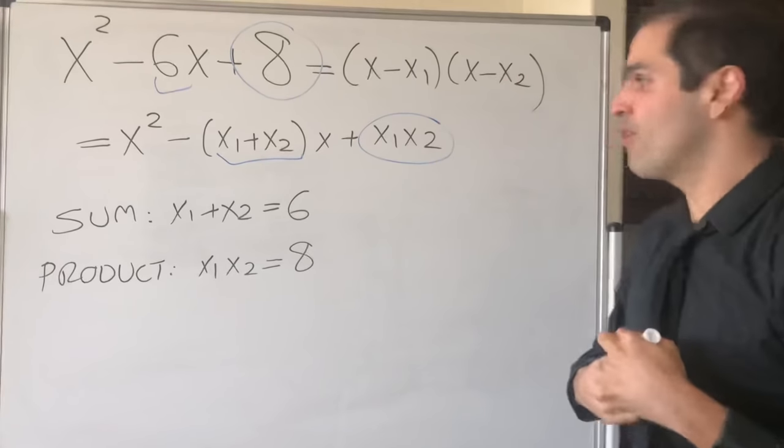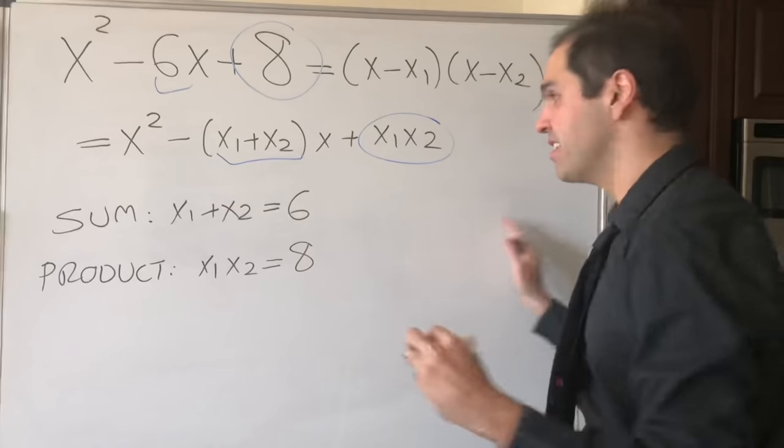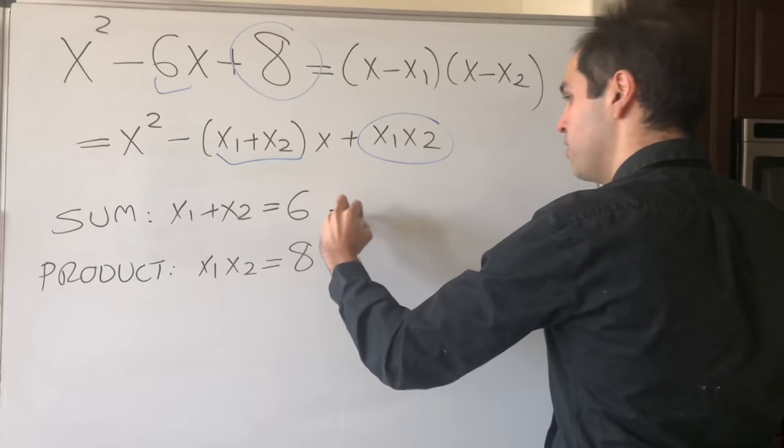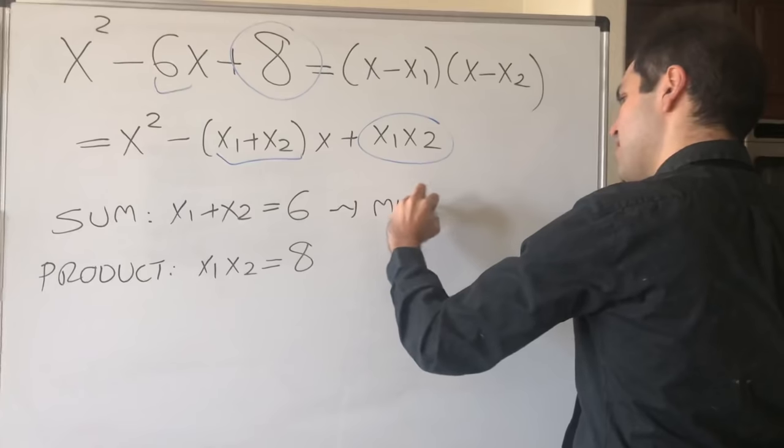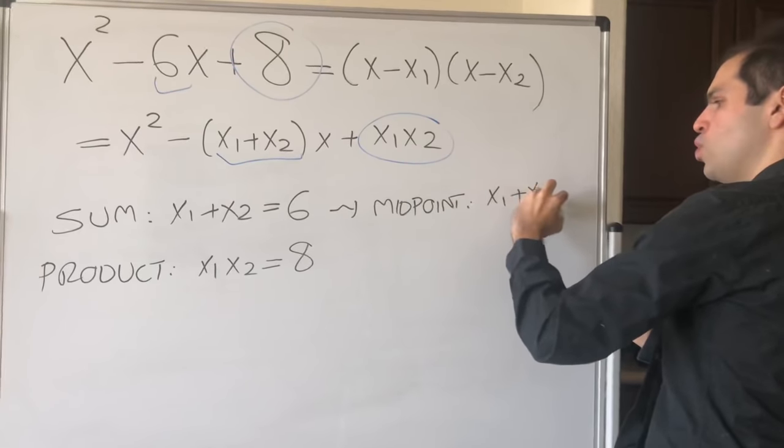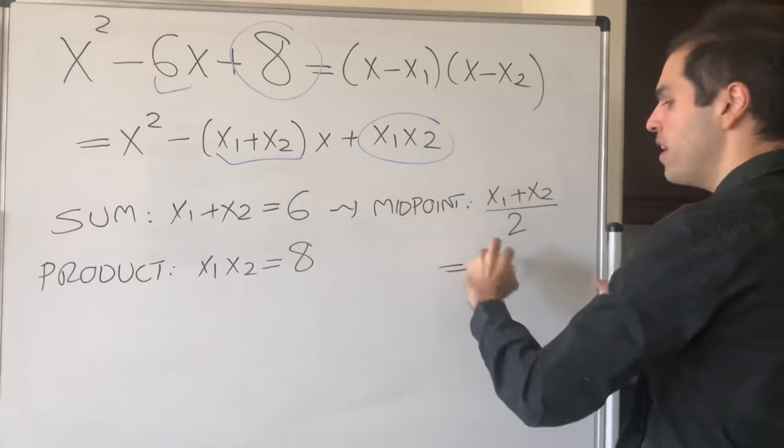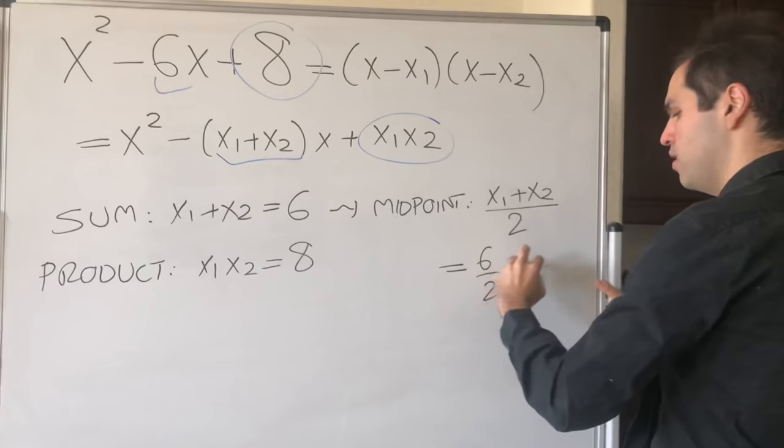Namely, here's the following clever observation. If the sum of the roots is 6, then the midpoint, which is (x₁ + x₂)/2, so the average between the two, now becomes 6/2, and that's 3.